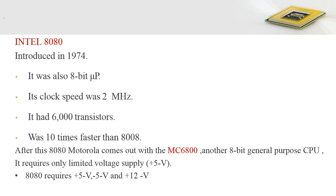Later in 1974, Intel introduced the 8080 processor. It was also an 8-bit microprocessor with an increased clock speed of 2 megahertz and approximately 6,000 transistors. It was 10 times faster than the 8008 microprocessor.